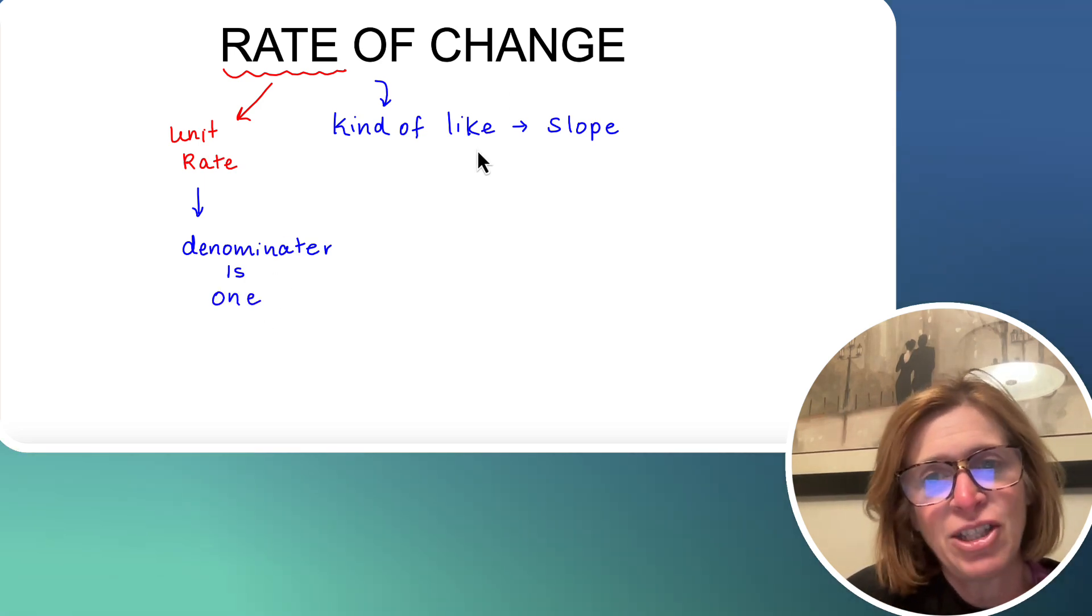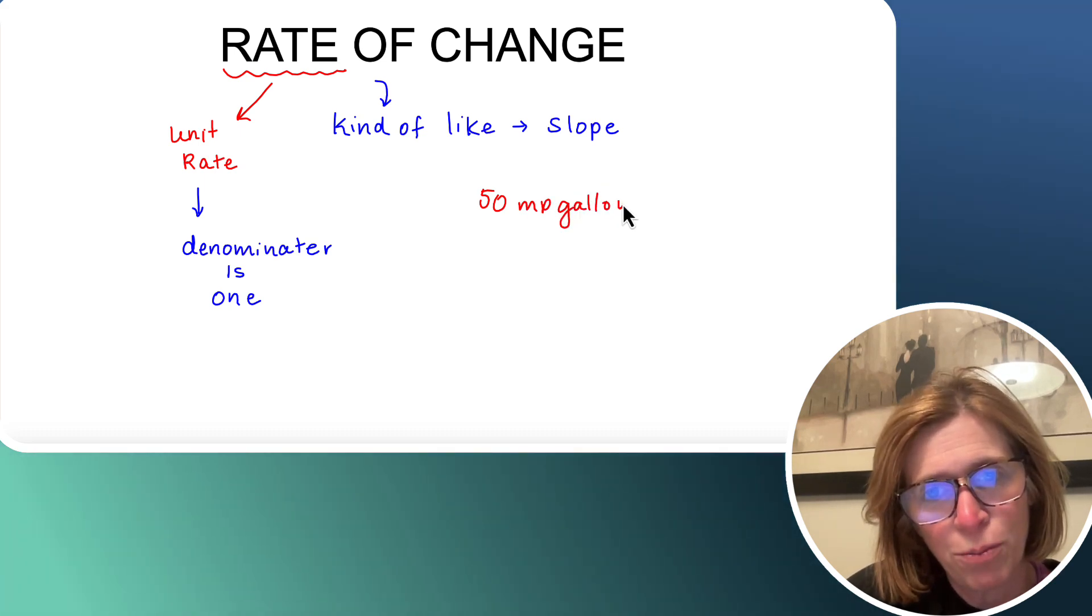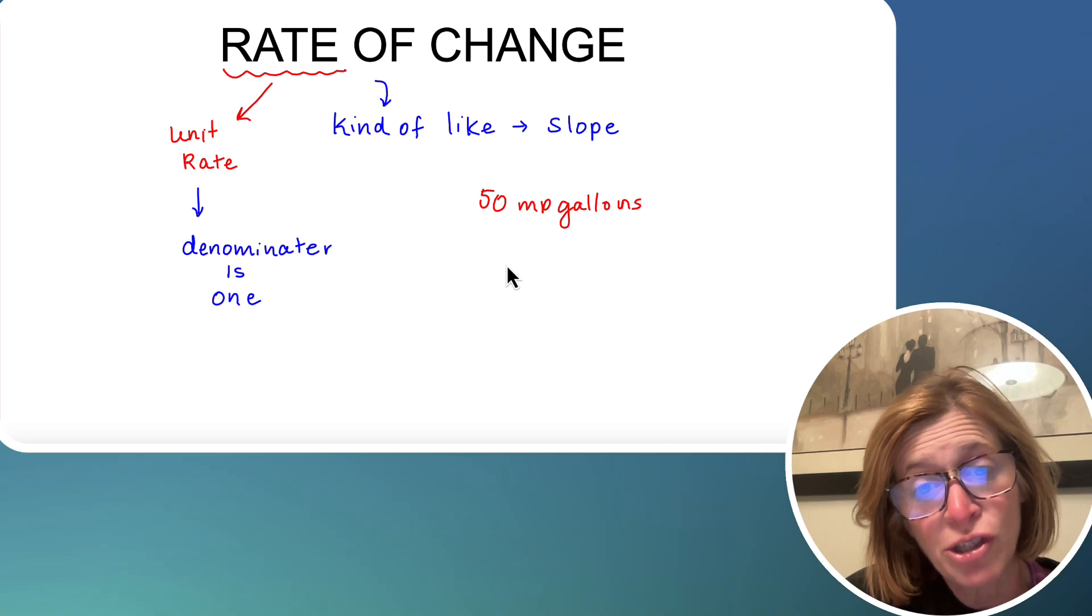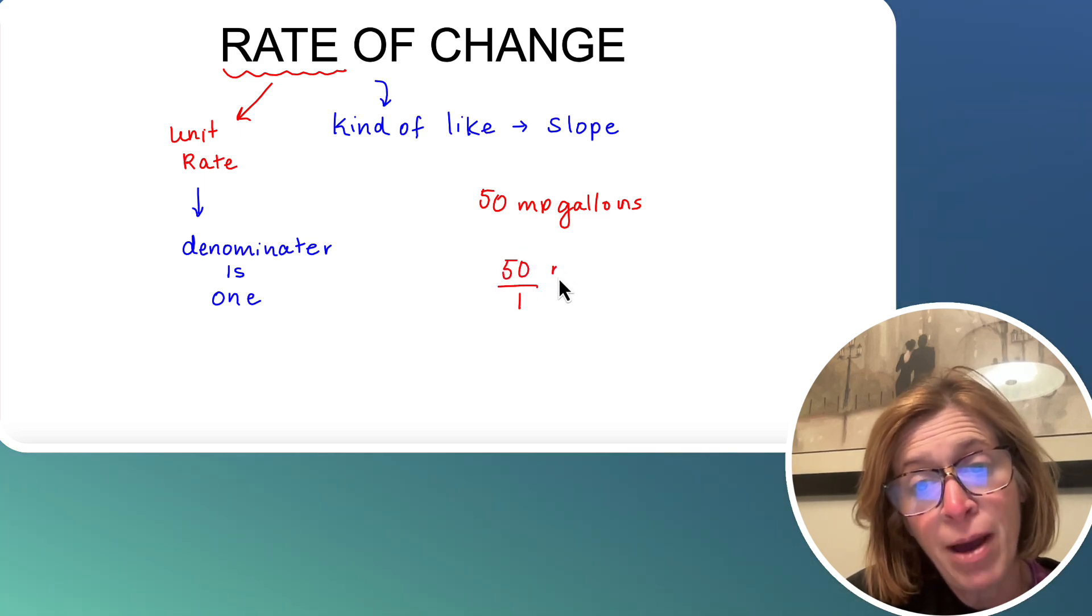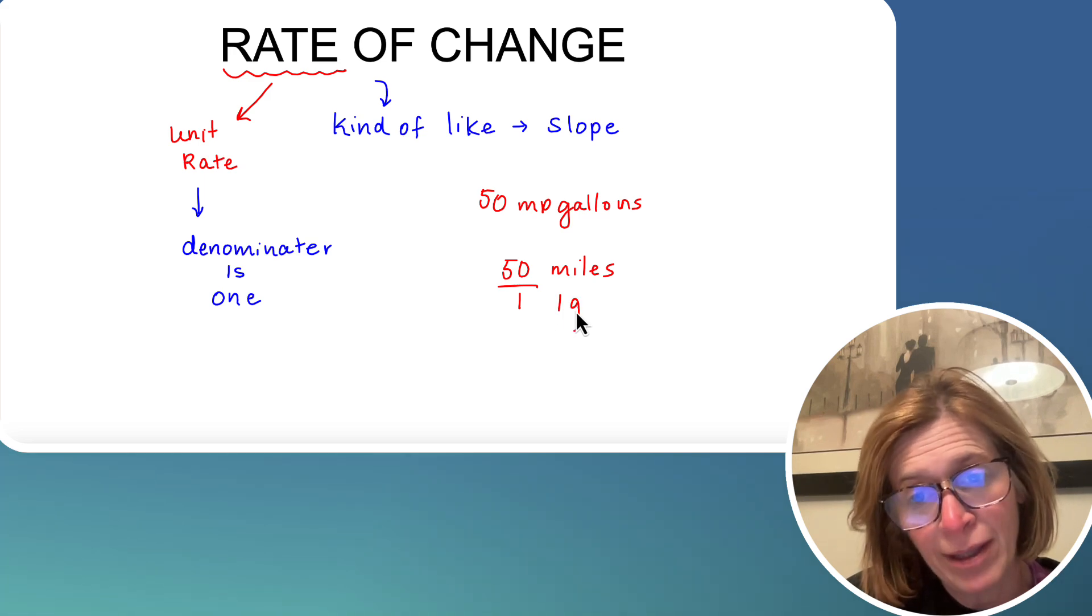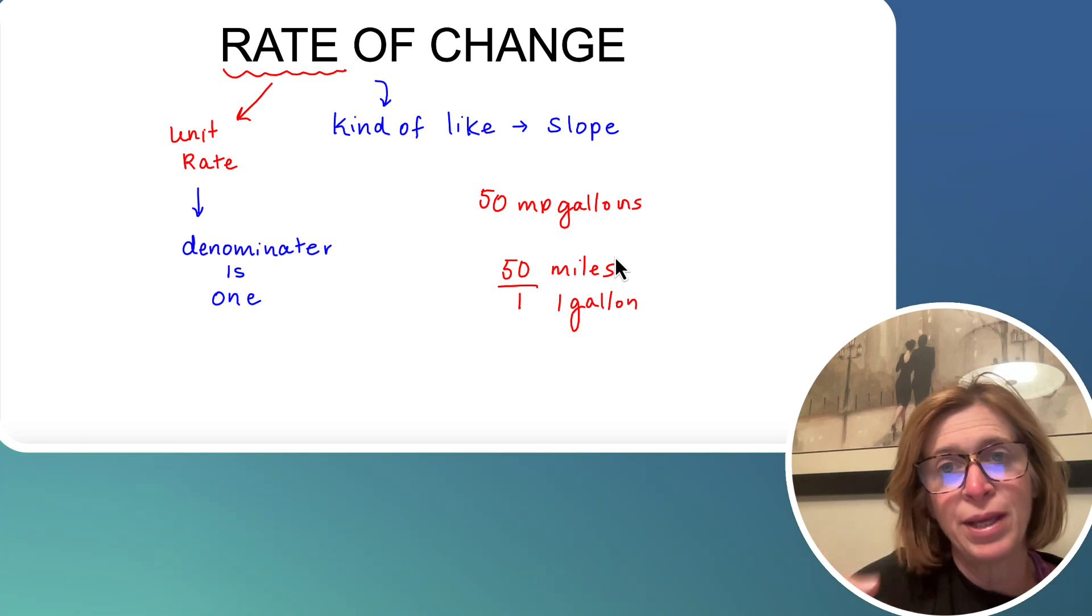If I said to you 50 miles per gallon, the rate of change of the slope would be 50 over 1. So 50 would be the miles for every one gallon. So again, we want to focus on the denominator being the number one.